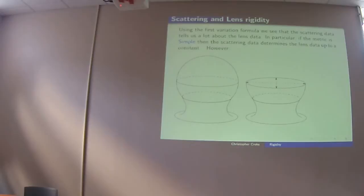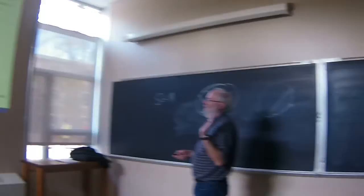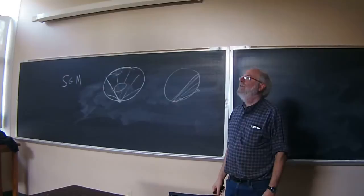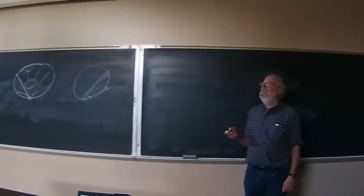At the moment, I don't know any counterexample to scattering data implying lens data when there isn't a trapped geodesic. This example has trapped geodesics, and there are no known examples without trapped geodesics where they differ. However, there is the invisible Eason lens — having non-uniqueness for scattering data is essentially inventing an invisibility cloak. Geometrically, it means geodesic rays going in come out just as if in two different spaces the same way. Gromov pretty much proved you can't do it for Euclidean space, but you can almost.